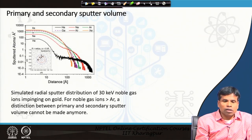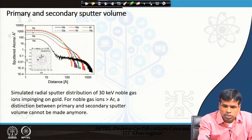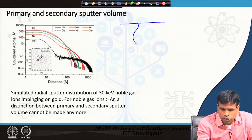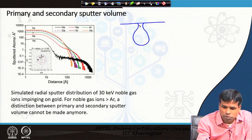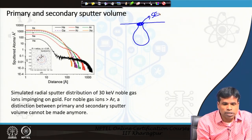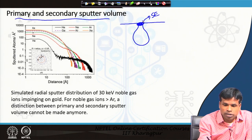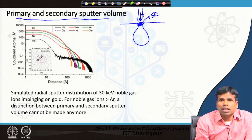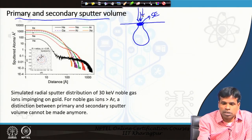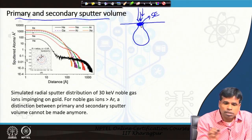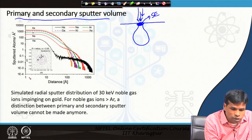If we look at the interaction volume — we have been previously discussing it for electrons and ions — it has a teardrop shape. From this region, the secondary electrons that emerge have been used for imaging purposes. But now, for the first time we are considering the primary and secondary sputter volumes. Sputtering will certainly occur where the ion or electron beam is incident. Sputtering will be less with electrons, but with ions — because they have heavier mass — sputtering will occur more, and heavier ions produce more sputtering.